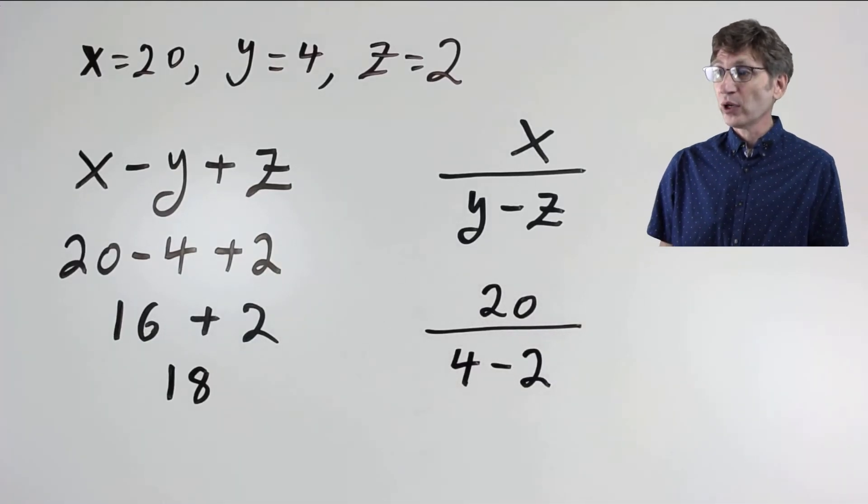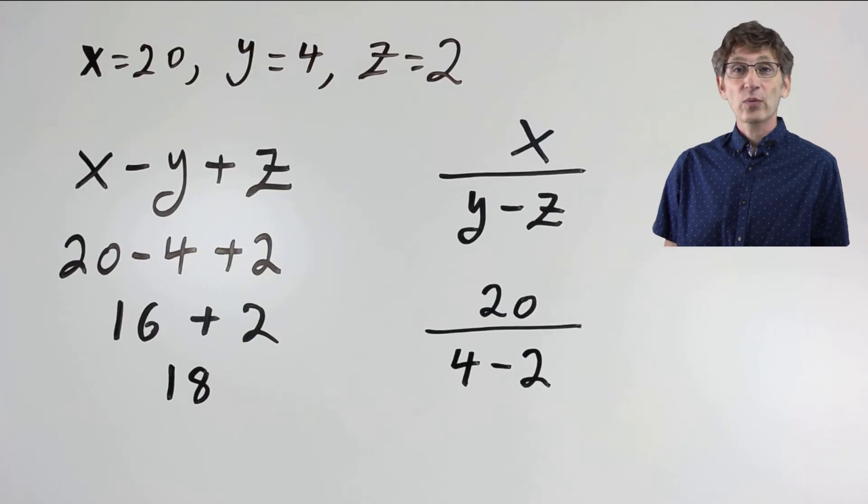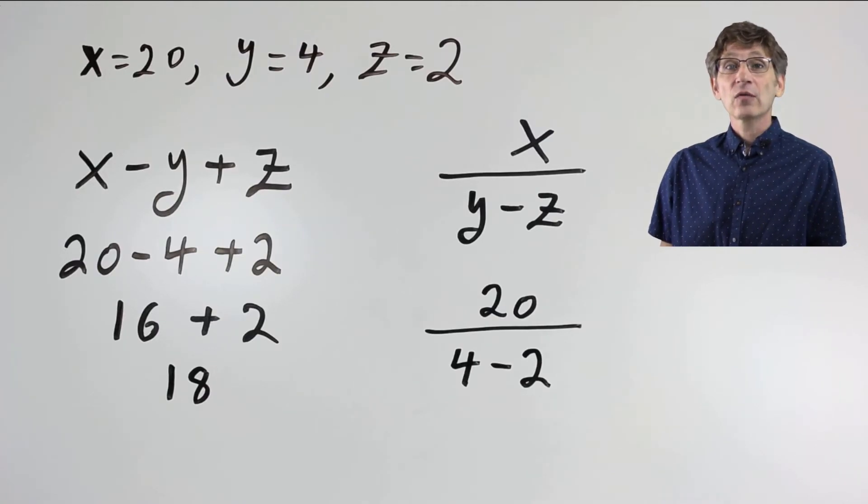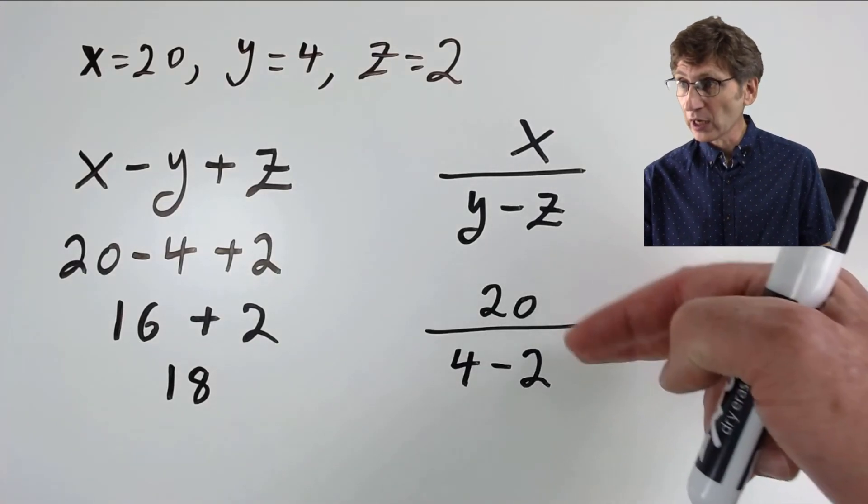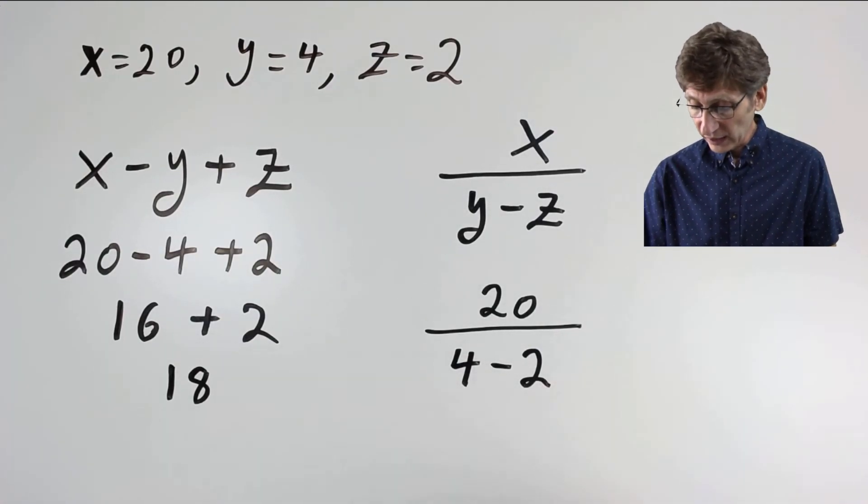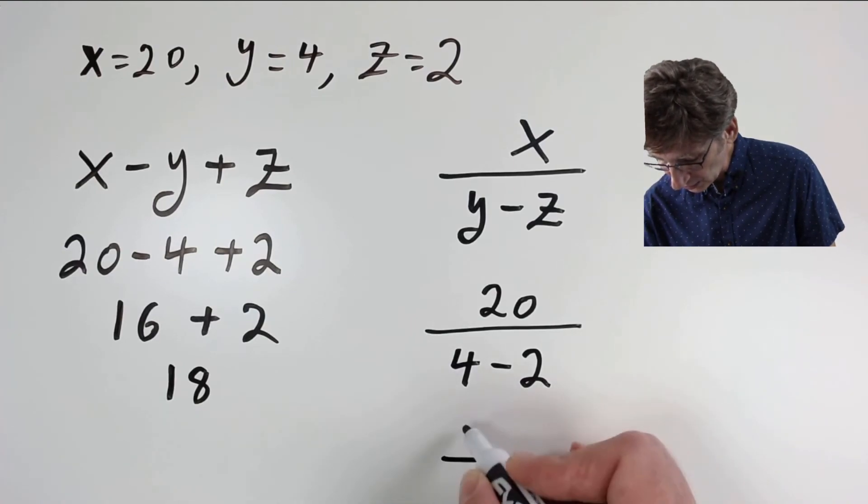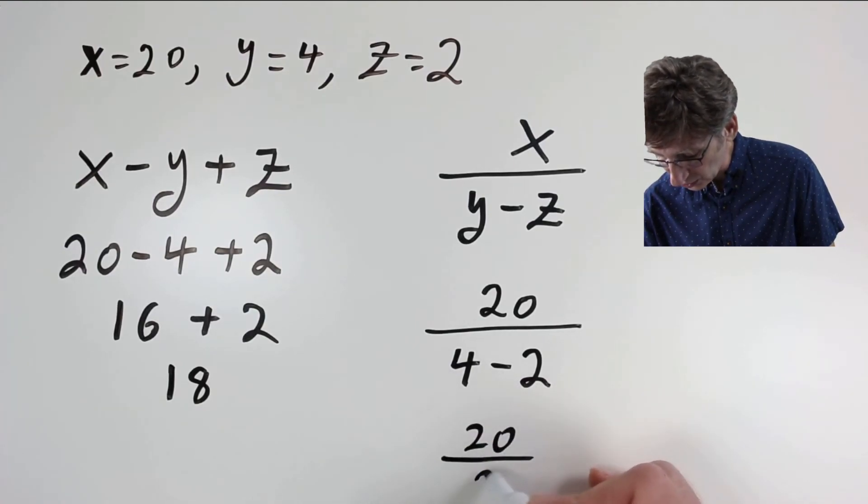So I have 20 divided by 4 minus 2. Fraction bars give us grouping, so the numerator and the denominator are grouped separately. So I will evaluate the denominator first. 4 minus 2 is 2.